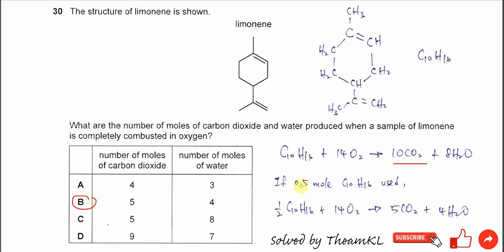If half a mole of this compound gets burnt, so eventually you'll get 5 moles of CO2 and 4 moles of H2O. So the answer is B. That's all.